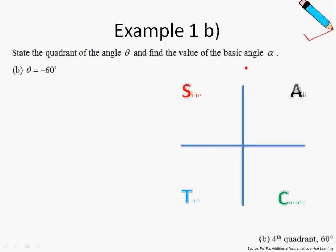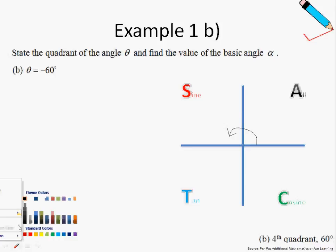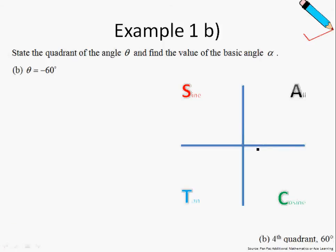Let's move on to example 1b. Similar question: state the quadrant of theta and find the value of the basic angle. Now we have a negative value for theta. For negative values, recall that for positive values we always move anticlockwise. For negative values, we move in the opposite direction — clockwise. Since theta is negative 60 degrees, I will still be in this quadrant. So this is my theta. I'm going to drop a triangle here.